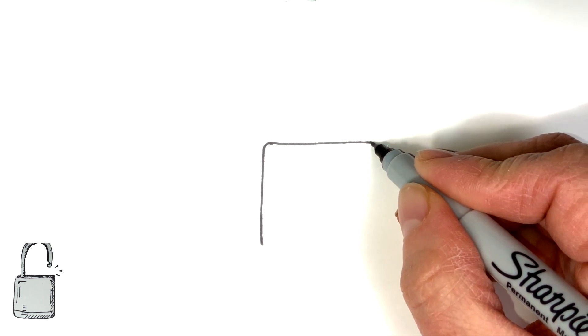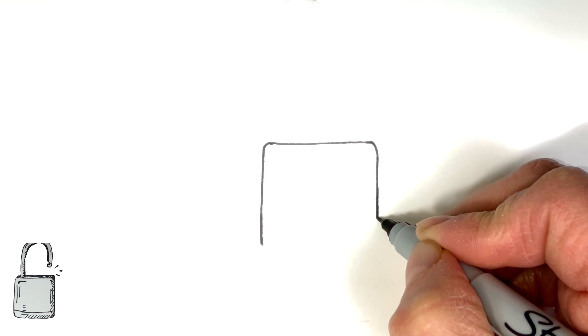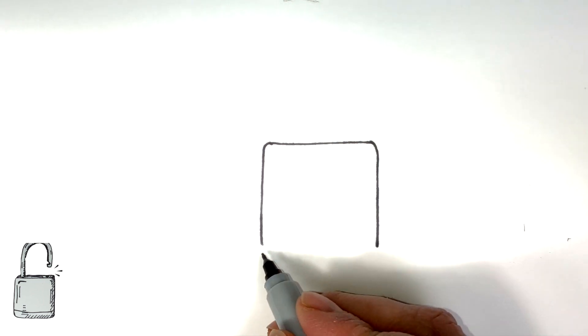So we're starting with the body of the lock again. Make it match your other lock, so it's kind of a square with rounded corners.